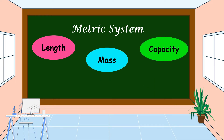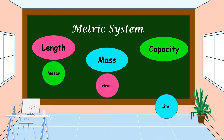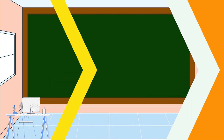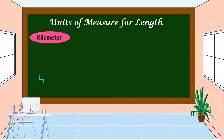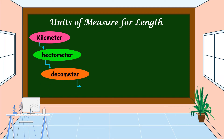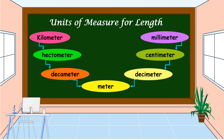The basic unit for length is meter, for mass is gram, and for capacity is liter. The units of measure for length, or linear measurement, are: kilometer, hectometer, decameter, meter, decimeter, centimeter, and millimeter.